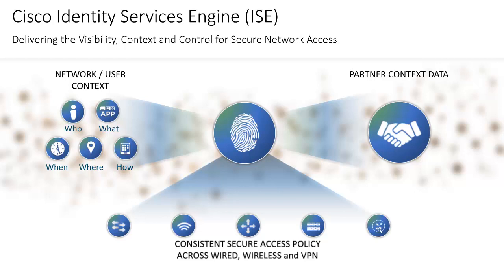Let's start with the contextual information that Cisco Identity Services Engine provides. ISE provides a wealth of contextual information such as who, what, when, where, and how people and devices are connecting to the network, ensuring that they are in compliance with the organization's security policy. PXGrid is the framework on how these security solutions or ecosystem partners will integrate with ISE to obtain this information.